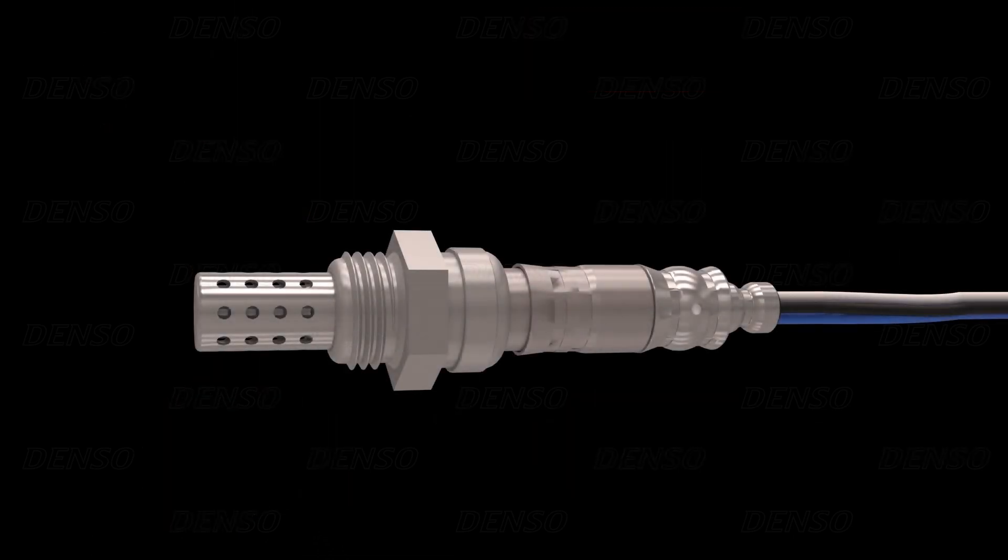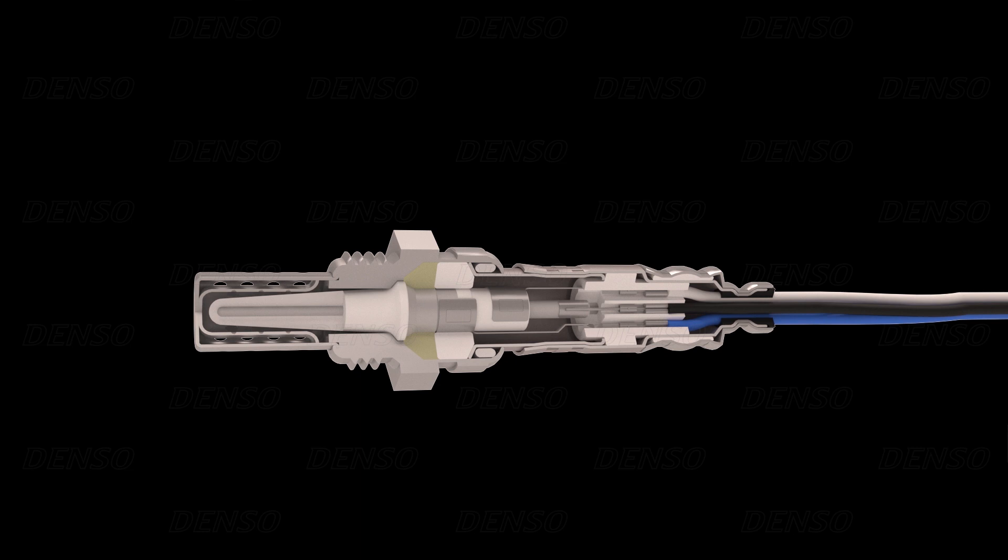Now, how does the oxygen sensor work and how does it influence the air-fuel ratio? When cutting away the outer stainless steel skin, we can see the inner components. The tip of the sensor is where the sensing takes place, so it is sometimes referred to as the nose. Underneath the protective nose cover, we see the sensor element, which is made of zirconium dioxide ceramics.